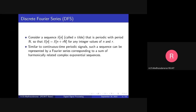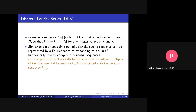We already tried Fourier series for the continuous time case — we tried to represent a periodic signal as a linear combination of harmonic components. In the same manner, we can try to represent any periodic sequence as a linear combination of harmonically related complex exponential sequences, with frequencies that are integer multiples of fundamental frequency 2π/N. If capital N is the period, then 2π/N is the fundamental frequency, and the kth harmonic corresponds to 2πk/N.